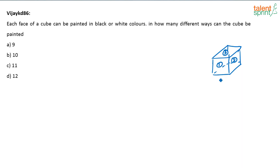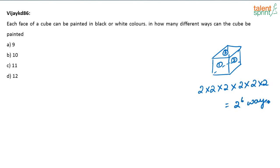The first side can be painted in two ways. The second side can be painted in two ways — either white or black. Similarly the third, fourth, fifth, and sixth sides each have two ways. So it's 2 to the power 6, which is 64 ways. This applies when the sides are distinct — for example, named side 1 or front wall, back wall — something distinguishable. If that is the case, the answer is 64.